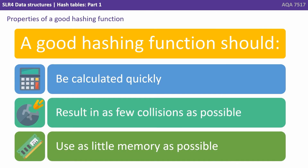So what are the properties of a good hashing function or algorithm? We should be able to calculate it quickly. It should result in as few collisions as possible and use as little memory as possible.